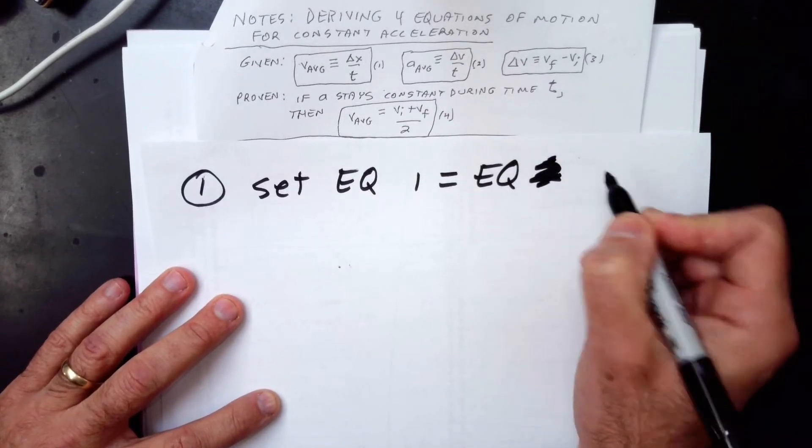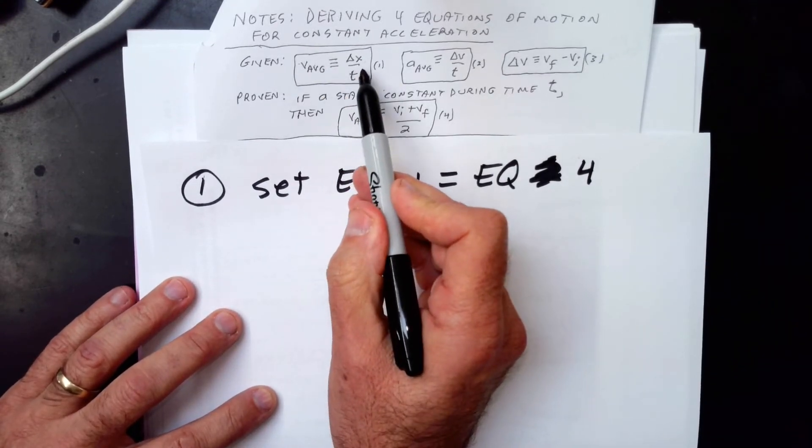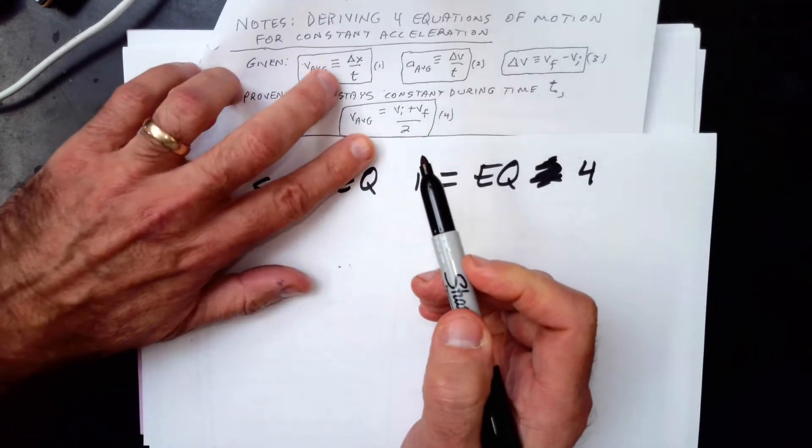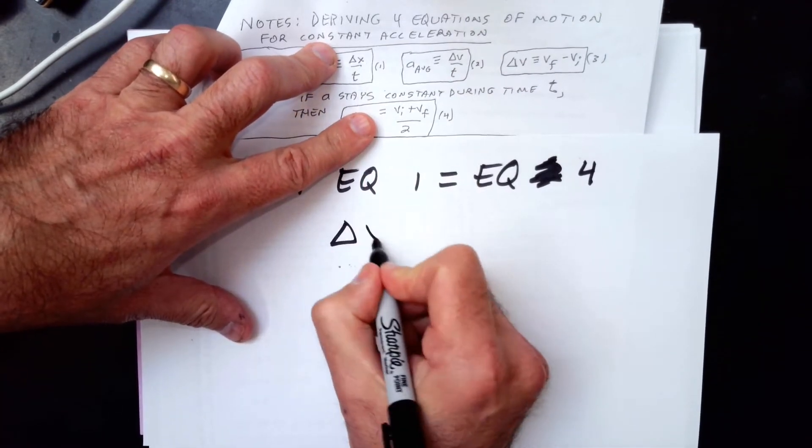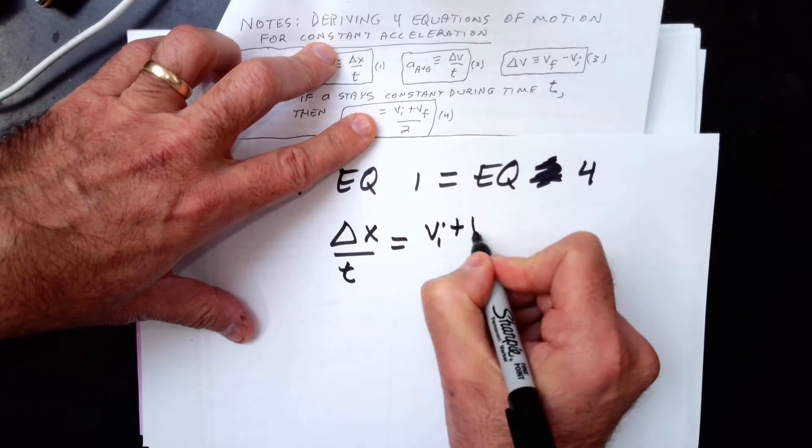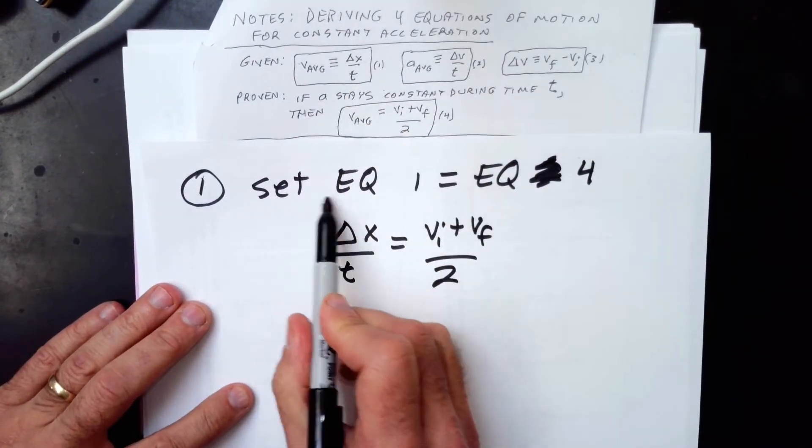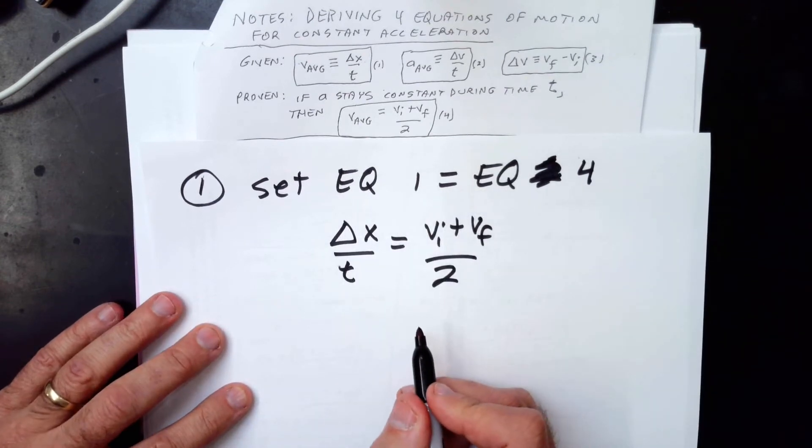I can just say set equation one equal to equation four. And that does the trick, because this equals v average and that equals v average, these two are equal to each other. So let's do that. Δx over t must be the same thing as vi plus vf over two, because they both equal v average. And this is okay, you can just write set equation one equal to equation four.